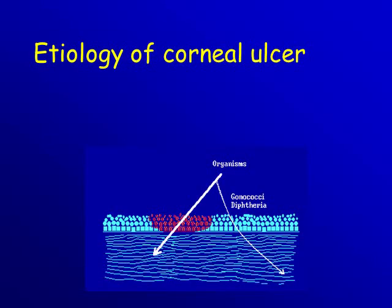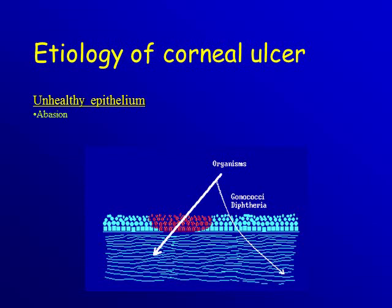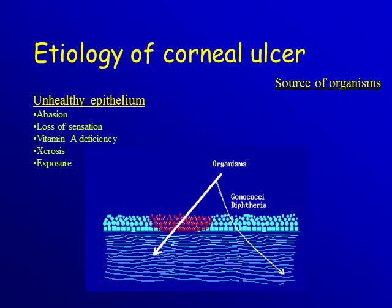What is the etiology of a corneal ulcer? In microbial corneal ulcers, all organisms need a predisposing factor to get into the cornea except gonococcus and diphtheria, which can invade intact epithelium, destroy it, and gain access into the tissues. Predisposing factors include abrasion, decreased or loss of sensation, vitamin A deficiency, dry eye, and exposure dryness. The source of organisms comes from the surrounding environment.